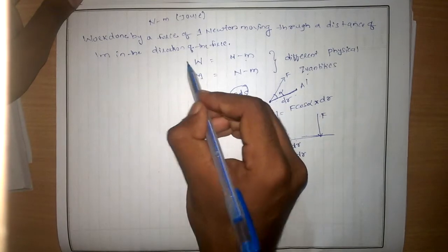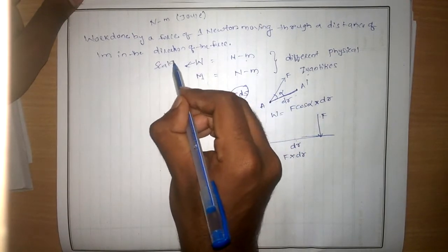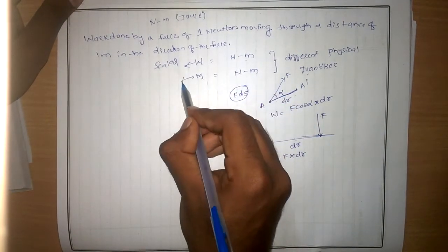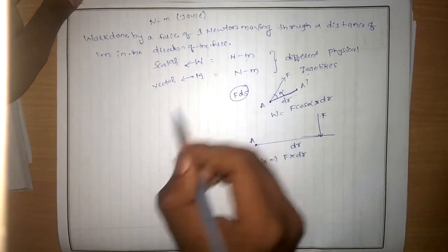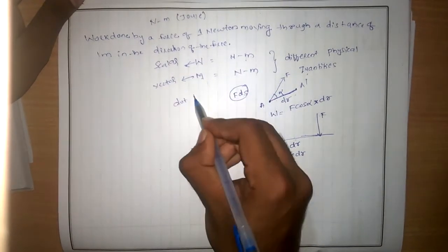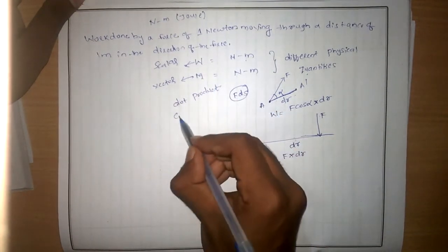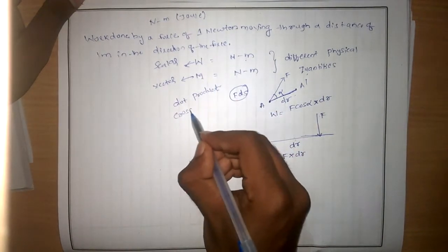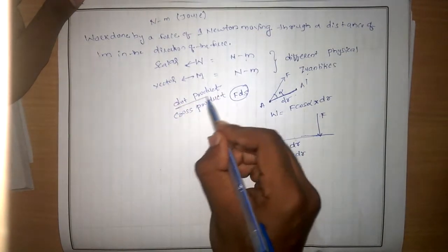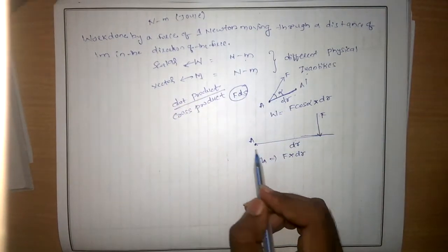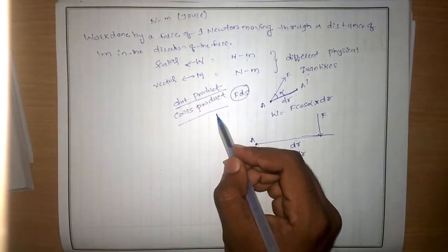Work is a scalar quantity, whereas moment is a vector quantity. Work is the dot product of force and displacement, whereas moment is the cross product of force and displacement.